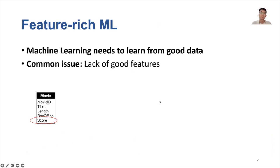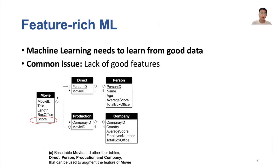For example, consider a machine learning task that predicts the score value of a movie based on features such as movie ID, title, length, and box office. Intuitively, because many important features are missing, such as the features of directors of a movie, it is hard to train a good machine learning model.